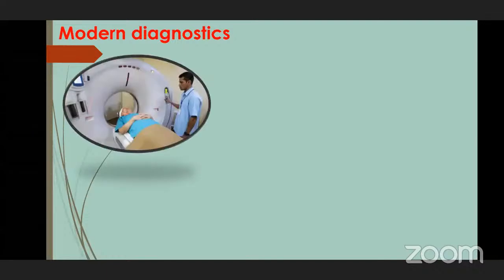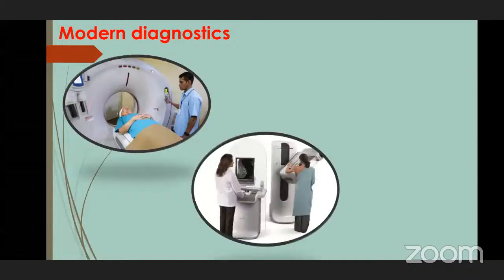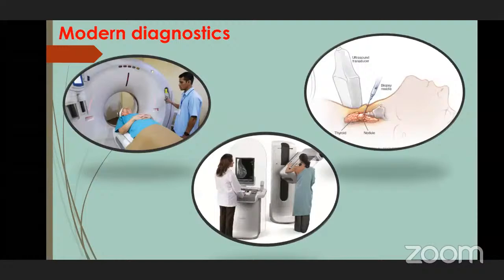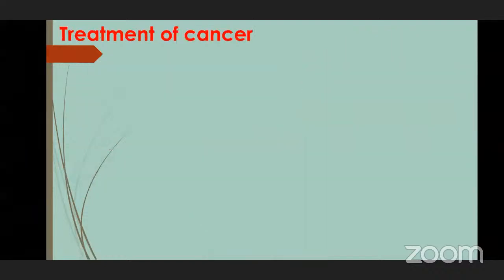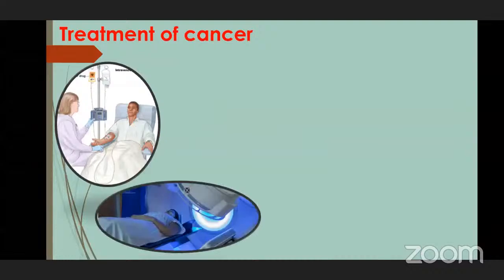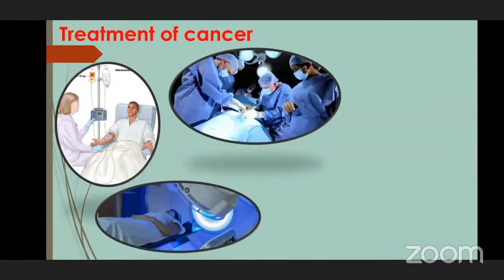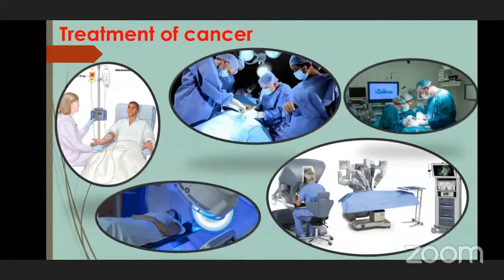There are modern diagnostic treatments to treat cancer, such as CT scan, MRI scan, mammography, and biopsy. These are the modern diagnostic methods used for cancer. There are also treatments like chemotherapy, radiation therapy, and modern techniques like robotic and laparoscopic surgery. These are the modern treatments and equipment available to treat cancer.